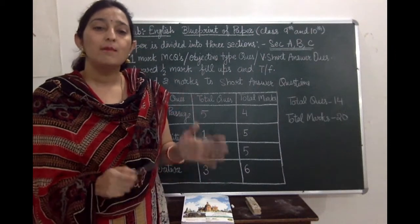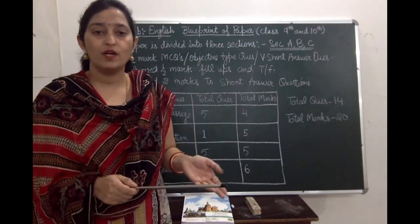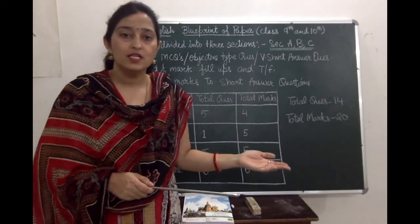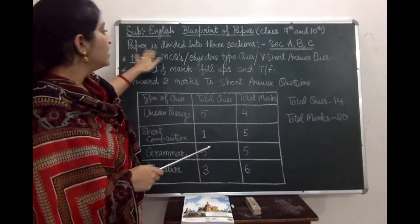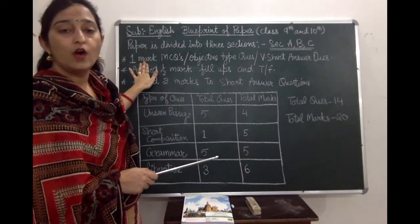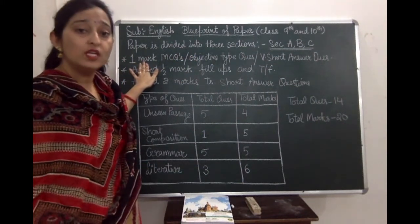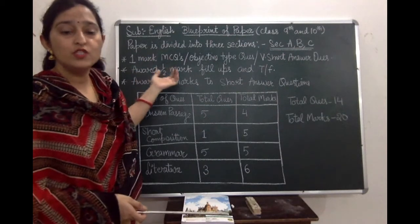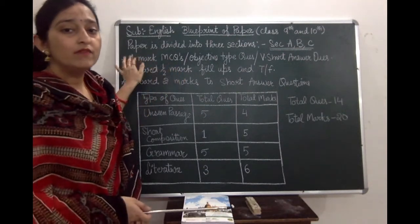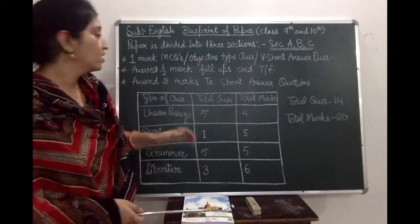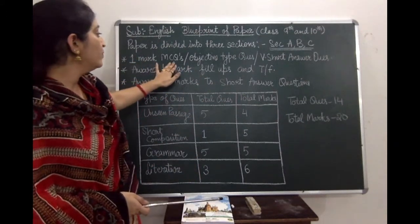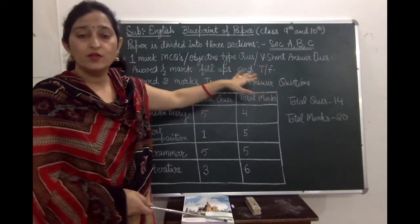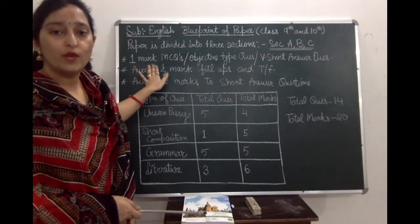So that is the partition of the question paper: Section A, Section B, and Section C. Now we are going to talk about the Google Classroom platform — what kind of questions you are going to get and what will be the marking scheme for all those questions.